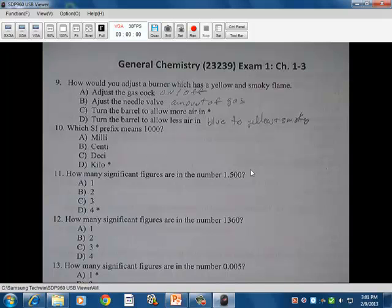Number nine, how would you adjust a burner if it was yellow and smoky flame? The adjusting of the gas cock is on and off for the gas. It has nothing to do with the yellowness of the flame or not. Needle valve is the amount of gas coming there. So that'll make your flame higher or lower, but not adjust its yellowness or smokiness. Turning the barrel to allow more air in turns it from yellow, smoky, to the blue flame, which is what you want. So that's the answer.